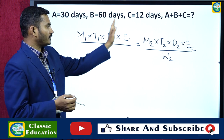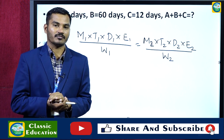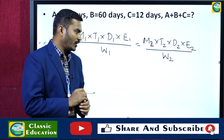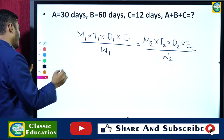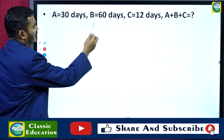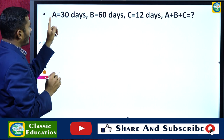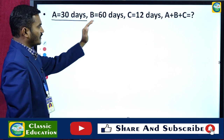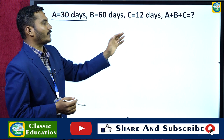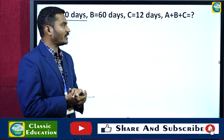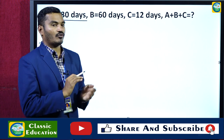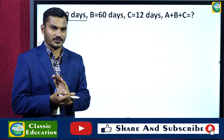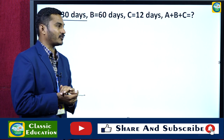In this particular type of problem, we solve it using the LCM method. Here is a simple question: A does a work in 30 days, B does it in 60 days, and C does it in 12 days. Then in how many days will A, B, and C together complete the entire work?